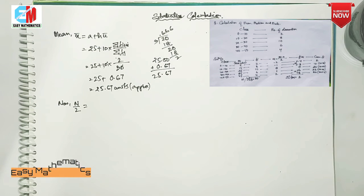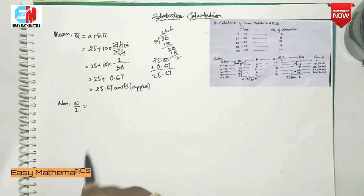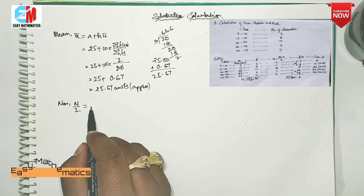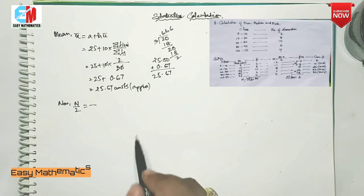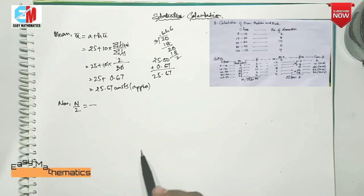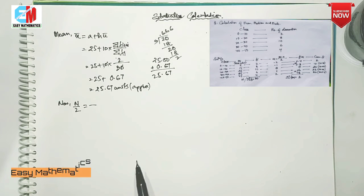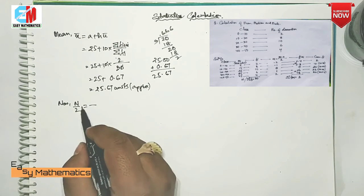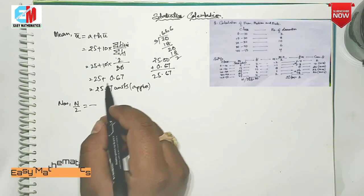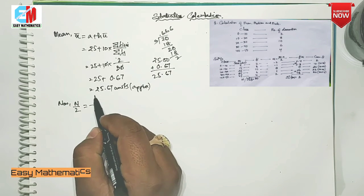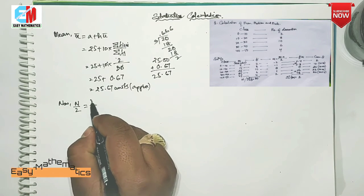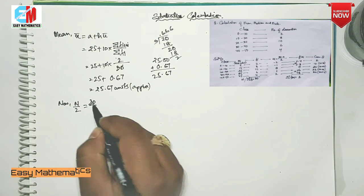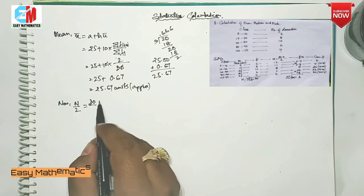The median formula — if you want the median, the median is the total. In the median, if the class can be informed, we apply the median formula.